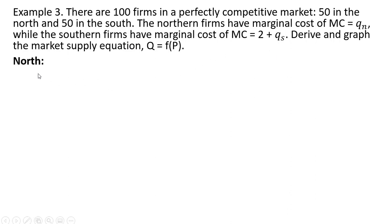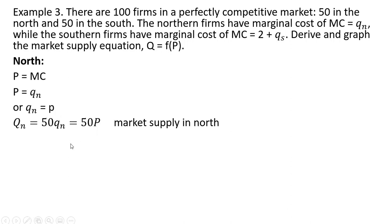Let's start with the north, setting price equal to marginal cost and solving for Q — we have the individual firm supply in the north. To get the market supply in the north, since there are 50 firms just like this one, it's just going to be 50 times Q subscript n, or 50p.